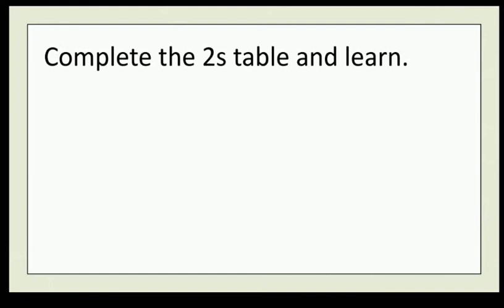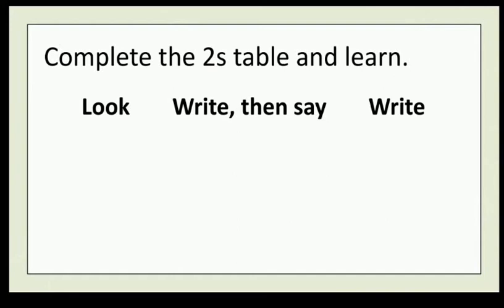Now complete all the parts in your book. Complete the twos table and learn. First have a look, write, then say, and then write the table. As you can see, a circle having two dots, a circle having two dots. It means two sets of circles having how many dots? Four dots. It says two twos are four. So it will be written as two multiply by two is equal to four. And the same example is given below, three twos are six.